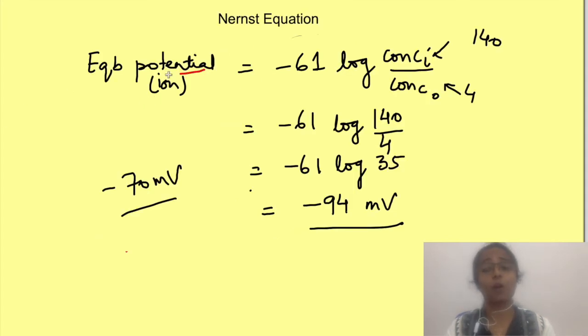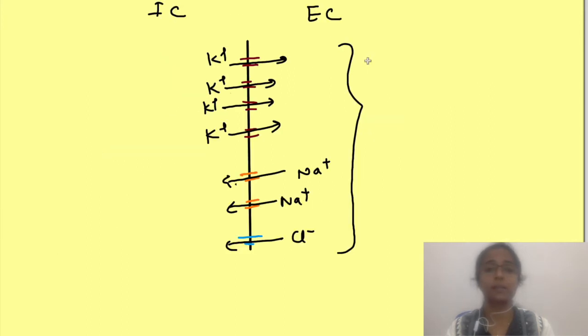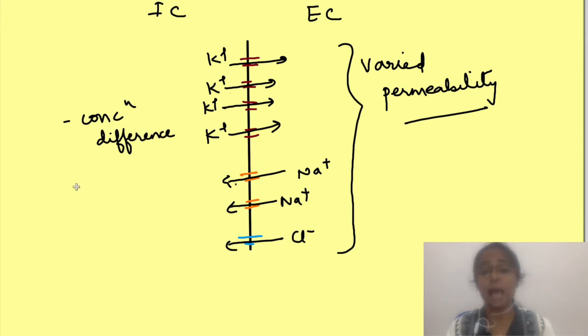We have already said that Nernst equation is used for single ion. Secondly, Nernst equation assumes that membrane is fully permeable to that ion. But here we are saying that membrane permeability to different ion varies. It's not fully permeable to all ions. So what will determine the value of resting membrane potential? Well all ions will have some role depending on the concentration difference inside and outside and the permeability of the membrane to that ion.